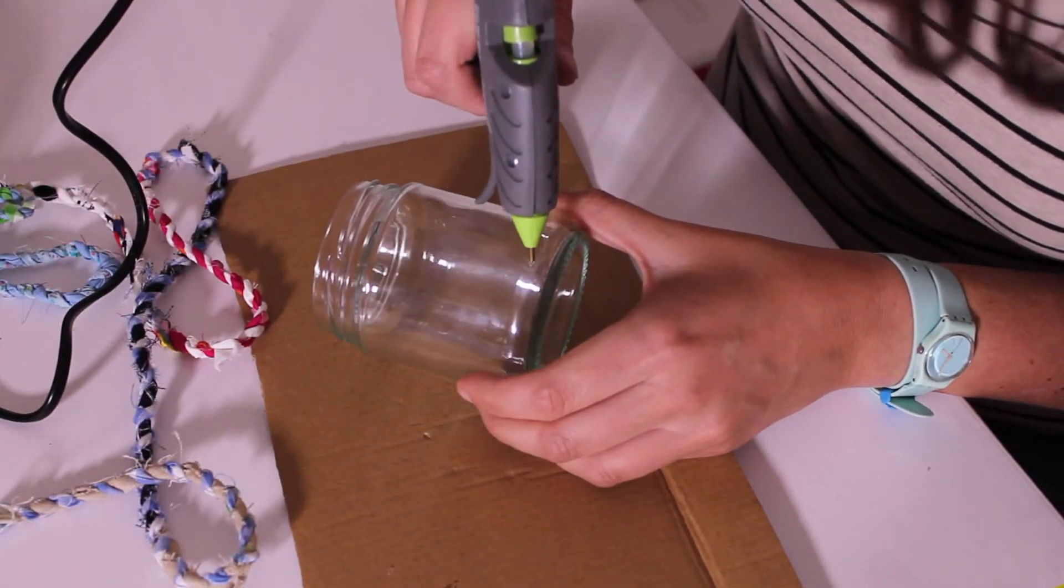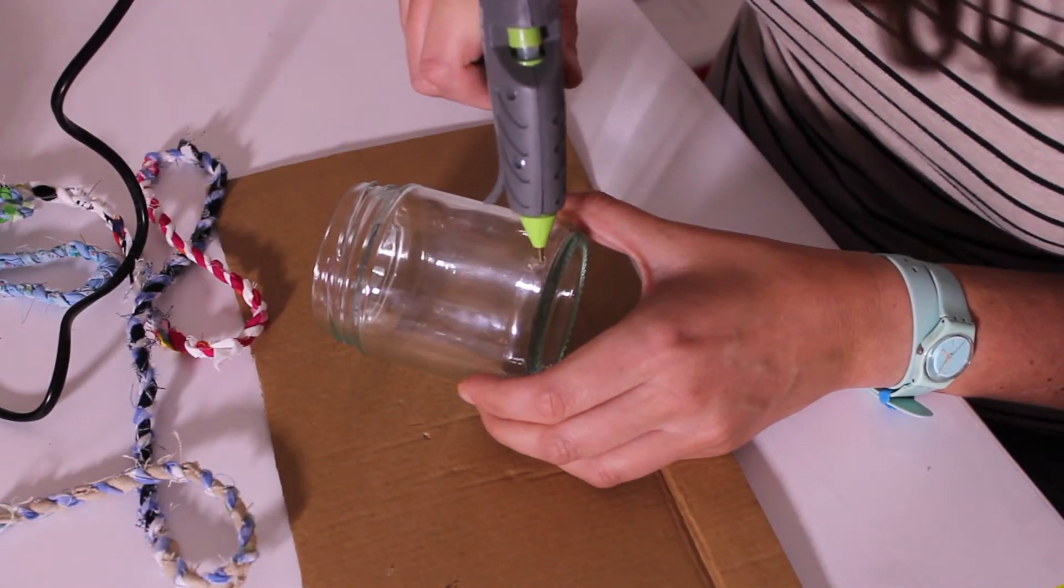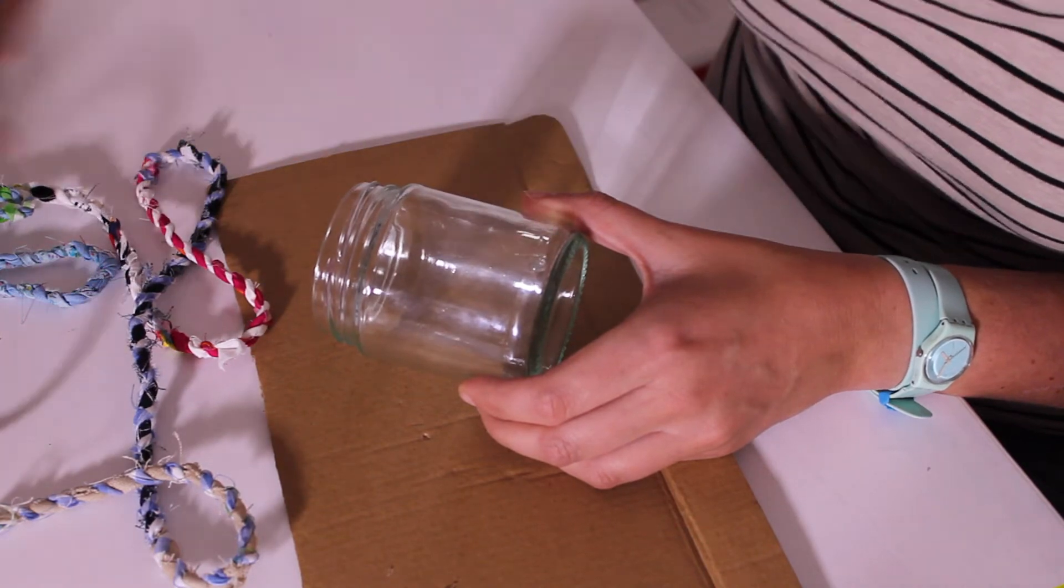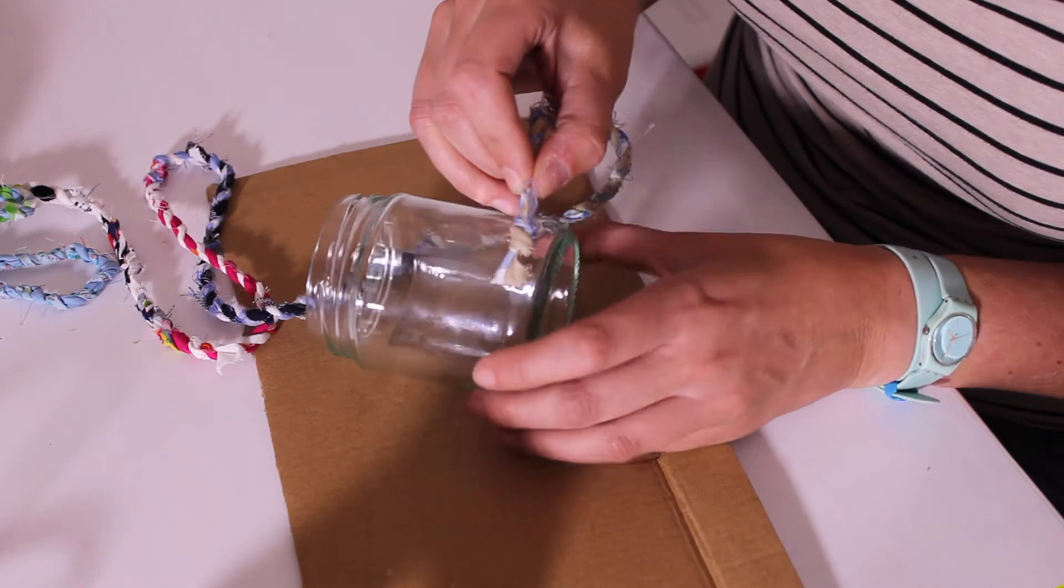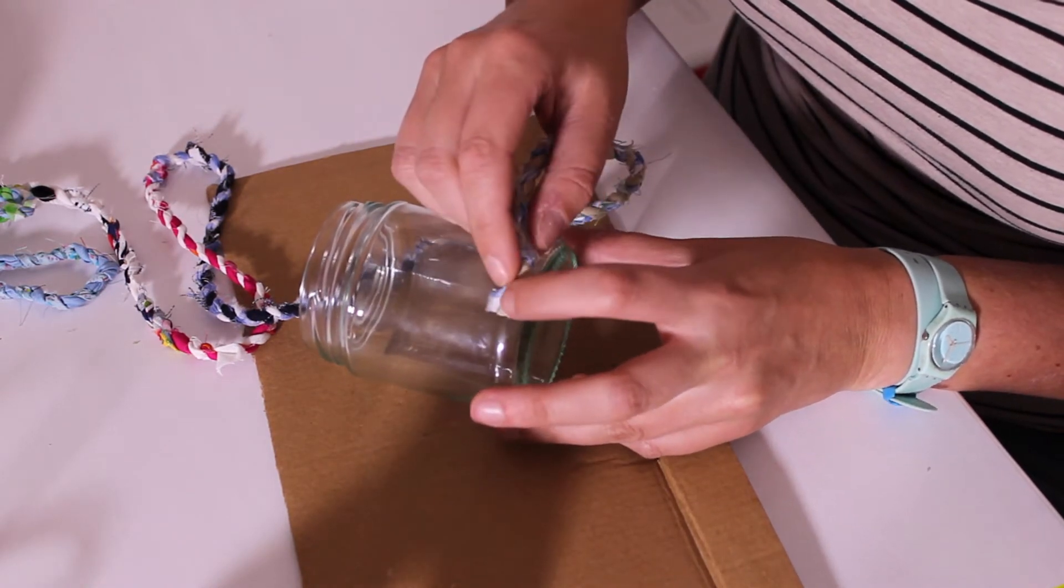So you start by just putting some glue on your jar. I always use something protective on your table when you use a glue gun, because with me it always seems to go absolutely everywhere. And we stick that to that.